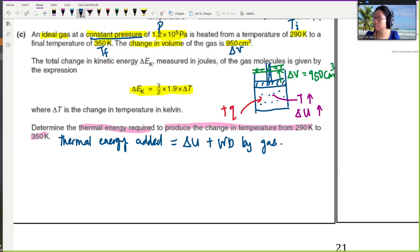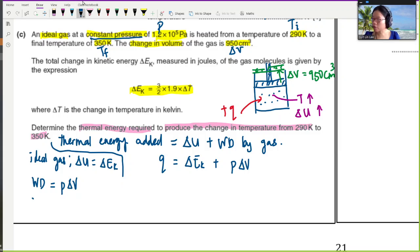So from here, because the gas is ideal, so for ideal gas, your delta U is equal to delta EK. All right. Delta U is equal to delta EK because there's no intermolecular forces. So from here, I will get Q is equal to change in EK plus work done by gas. What is work done by gas again? P delta V. We can use this equation because, so right here, work done will be equal to P delta V because we have constant pressure.